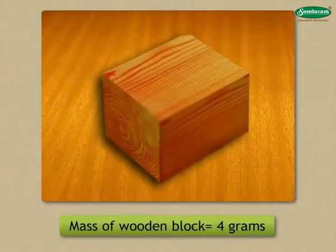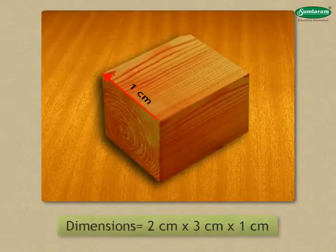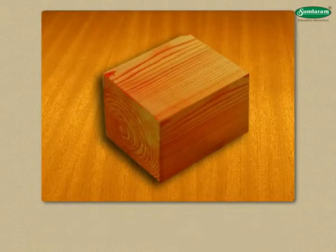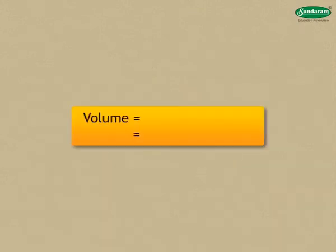If you had a wooden block of mass 4 grams and dimensions of 2 cm × 3 cm × 1 cm, what would be its density? To find the density, we need the mass and the volume. The mass is given as 4 grams and the volume is 2 × 3 × 1, which is 6 cm³.